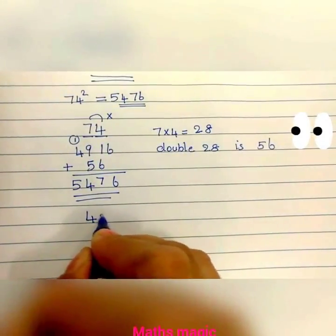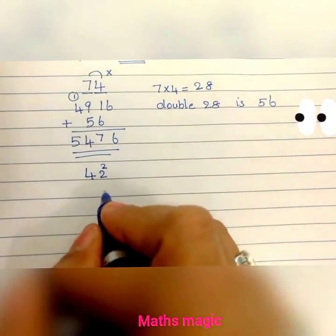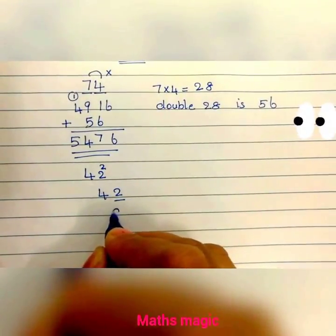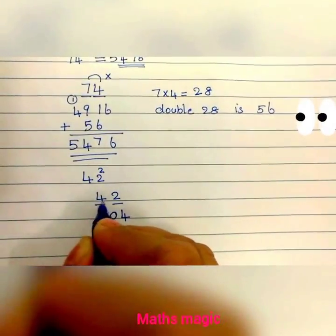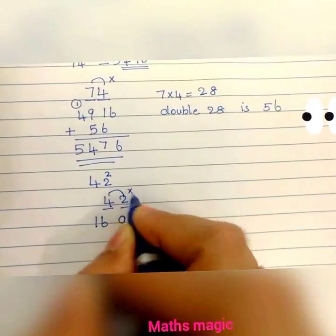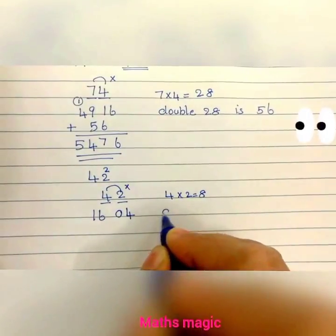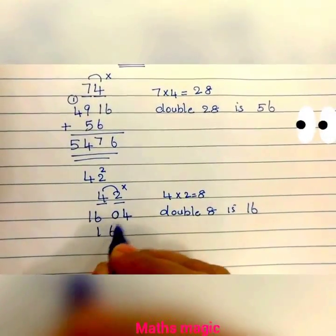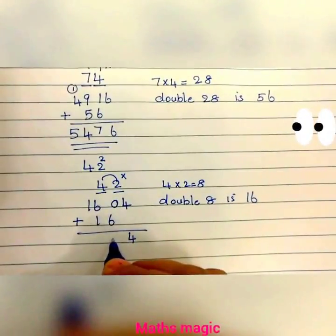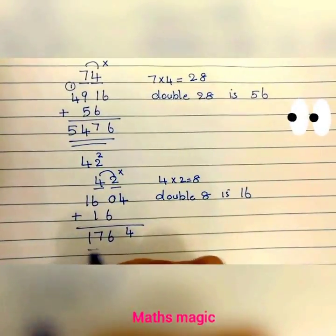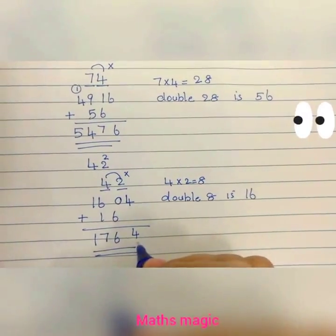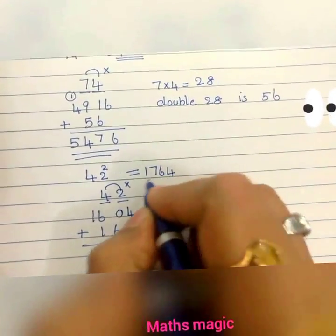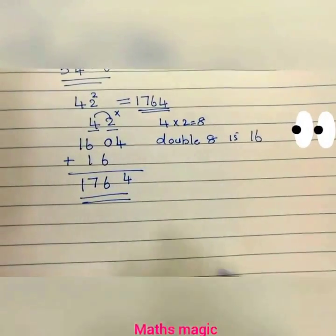Another example: 42 squared. The square of 2 is 4, but we write it as a 2-digit number: 04. Then 4 squared is 16. Now multiply 4 and 2: 4 times 2 is 8. Double 8 is 16. Add 16, leaving the unit place. 6 plus 1 is 7. So 42 squared is 1764.